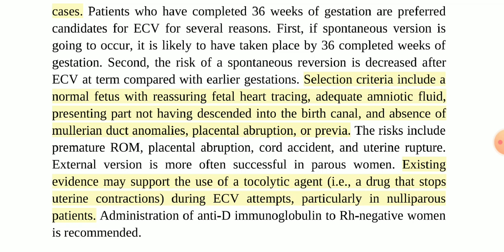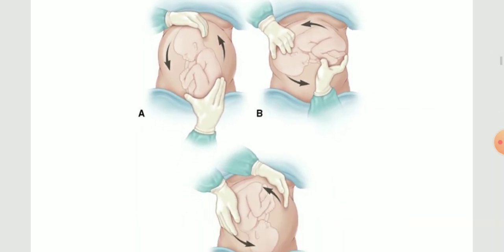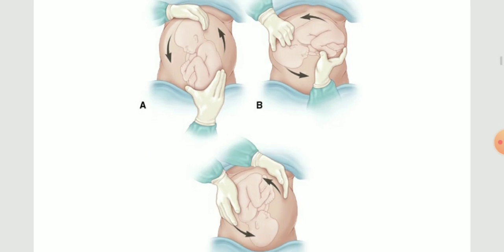External cephalic version is more often successful in parous women — those who have already had babies. Existing evidence supports the use of tocolytic agents, which are drugs that stop uterine contractions; when the uterus relaxes, it becomes easier to rotate the fetus. During external cephalic version attempts, particularly in nulliparous patients, administration of anti-D immunoglobulin to RH-negative women is recommended.